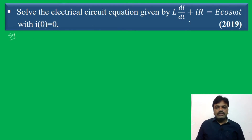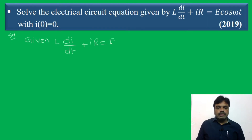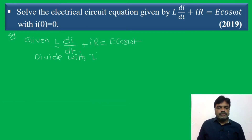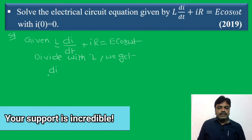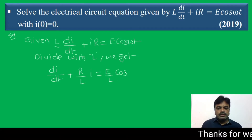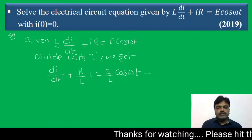Given directly: L dI/dt + Ir = E cos(ωt). Now divide throughout by L. We get dI/dt + (R/L)I = (E/L) cos(ωt). This is equation one. This is a linear equation.